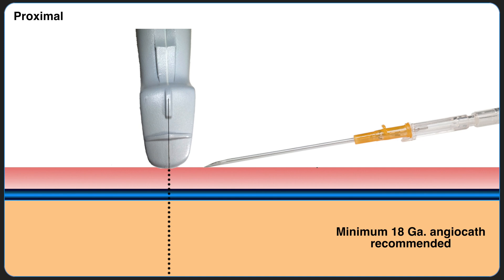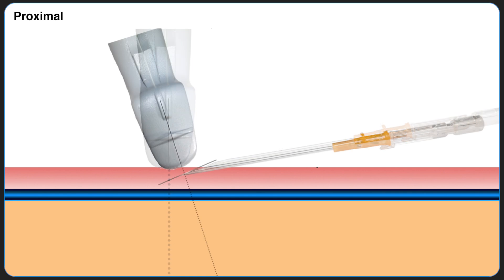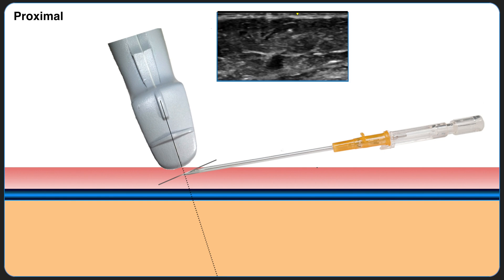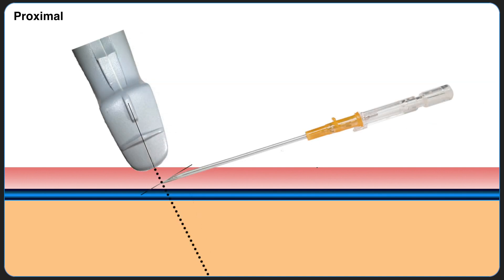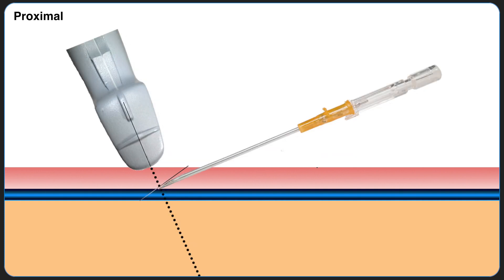There are two distinct phases in using the bevel to accurately locate the tip of the angiocath. The first stage of tracking the bevel is from skin to entry into the vessel. The emphasis here is on keeping the beam perpendicular to the plane of the bevel. To do so, the operator tilts the transducer to optimize conditions for visualization of the bevel. The tip of the bevel can be visualized as a hyperechoic dot in the subcutaneous tissue. As the needle is advanced, the ultrasound transducer is translated at a similar angle to continue visualization.